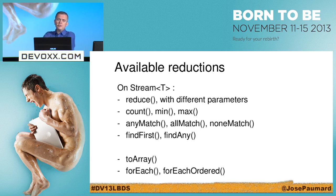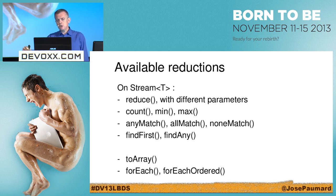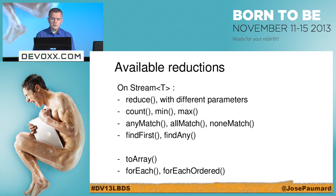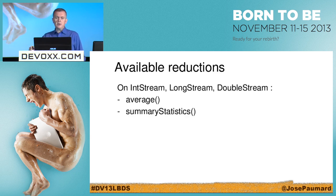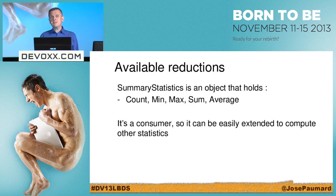What reductions do I have on Stream? I've got reduce() with different overloads, count(), min(), max(), anyMatch(), allMatch(), and noneMatch() — these can be used on infinite streams because they can finish in finite time. findFirst(), findAny(), toArray() — I definitely don't want to use toArray() on an infinite source. forEach() and forEachOrdered(). On numeric streams I also have average() and summaryStatistics() — a nice object that computes count, min, max, sum, and average all at once. I can even extend it to compute other statistics.